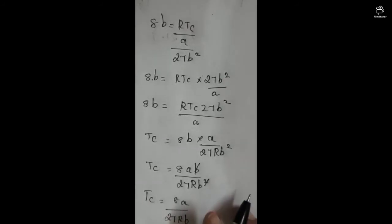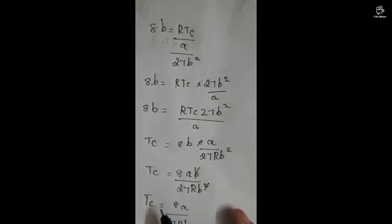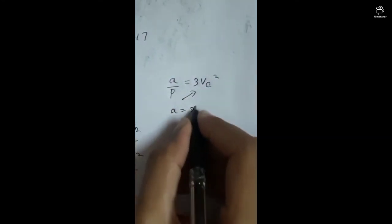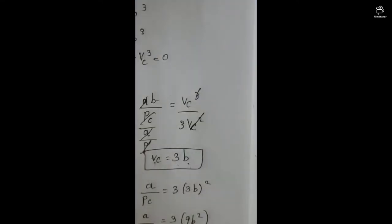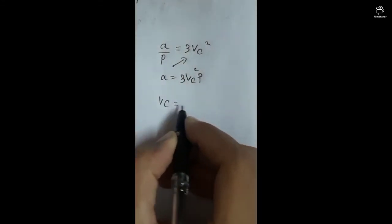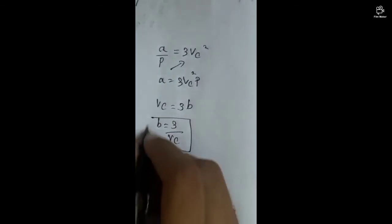Now we have Tc, Pc, and Vc. To find a and b: from equation 2, a = 3Vc²·Pc. For b, dividing equation 3 by equation 2 gives Vc = 3b, so b = Vc/3. These are the Van der Waals constants expressed in terms of critical constants.